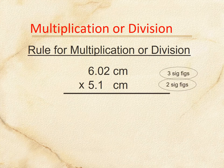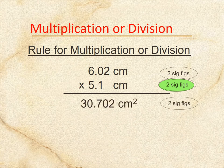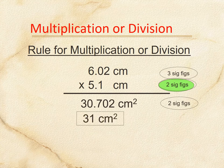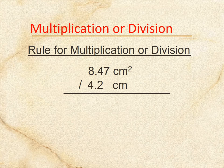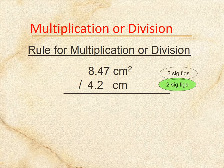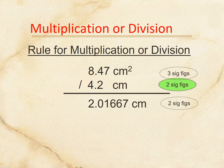6.02 is three sig figs, 5.1 is two sig figs, so the answer can only have two sig figs. Do the math: 30.702. Look at where the second sig fig lands — after the 3 — that's 0. Look to the right: it's 7, so that rounds the 0 up to 1, giving 31 centimeters squared. Another division problem: three sig figs divided by two sig figs, answer in two sig figs. Do the math: 2.01667. Look at the 0 — the digit next to it is 1, so it stays, giving 2.0.